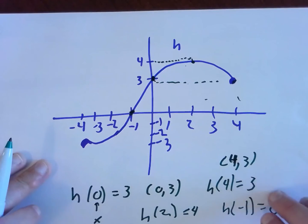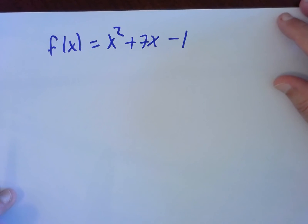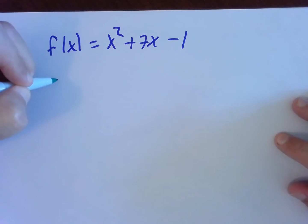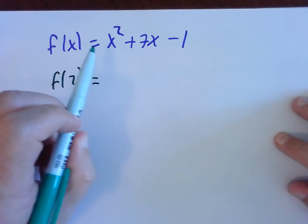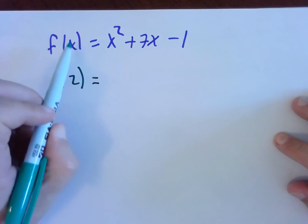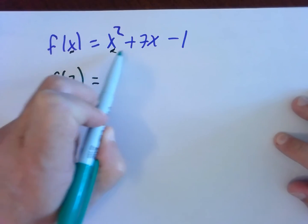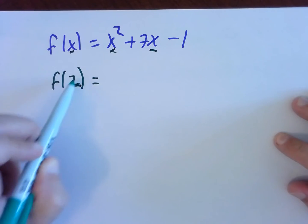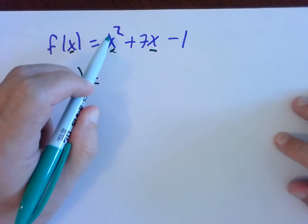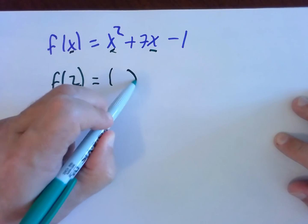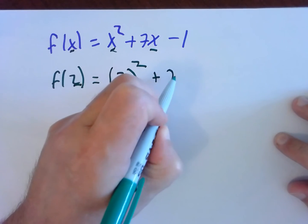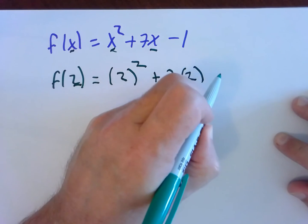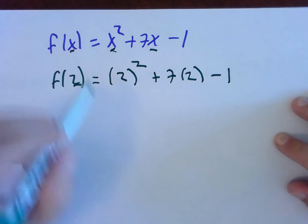Okay, what if somebody hands us a formula? This is the most typical. Somebody will hand us a formula and say evaluate the function. They might ask for, say, f of 2. This means rewrite this formula exactly the way it looks. But now instead of writing x here, here, and here, we're writing 2 in all those spots. So my formula is take the input and square it. What is the input? 2, plus 7 times the input in parentheses, minus 1. And now we just simplify.